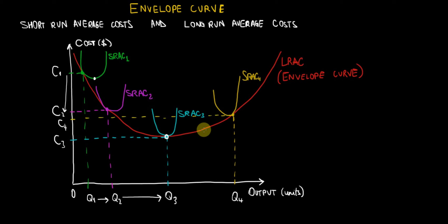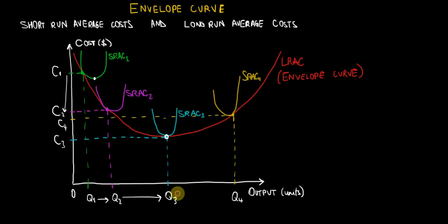Beyond that minimum point, the long run average cost starts rising again. We see an increase in average cost in the long run. The reason is diminishing returns to productivity of the factors of production, since they become less efficient and less productive over time. In order to push production as far as Q4, we will incur higher average costs per unit because investments in new fixed factors of production have to be even higher and we have to hire even more labor. So on average, our costs start rising.